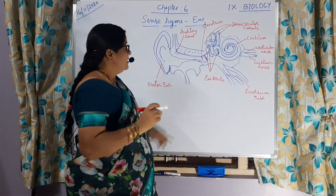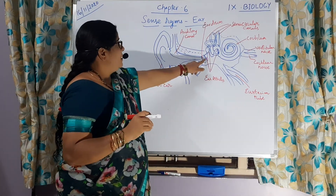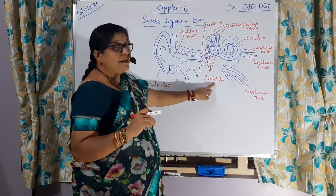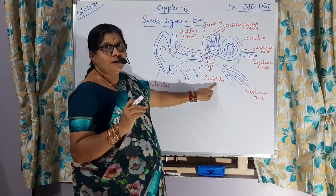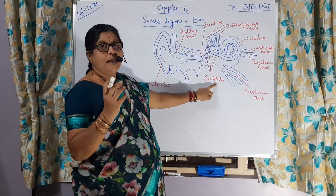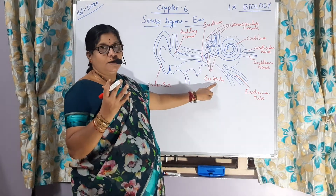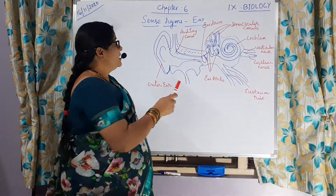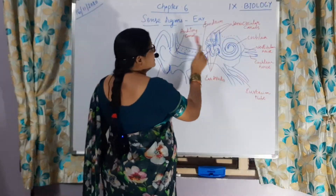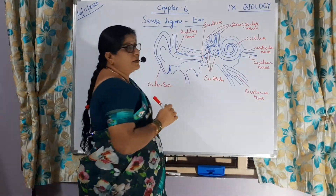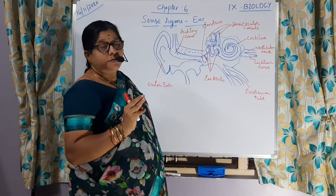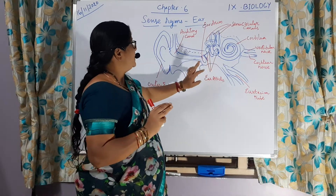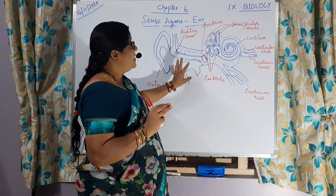The auditory canal contains a chain of three bones which we call ear ossicles — they are the tiniest bones of our body. They are incus, malleus and stirrup. So three bones are present in the middle ear.